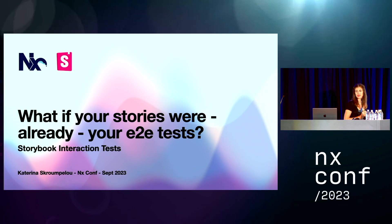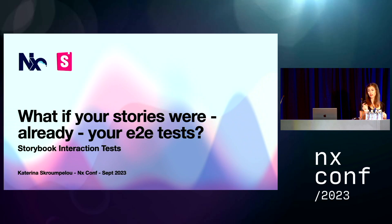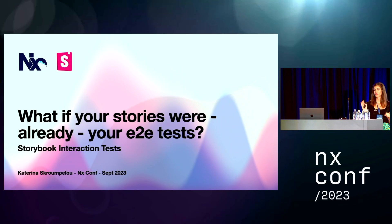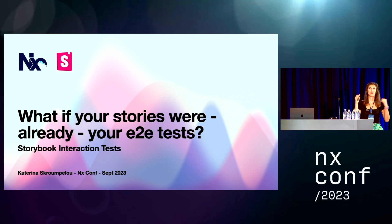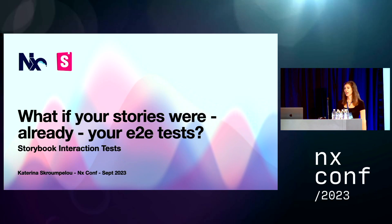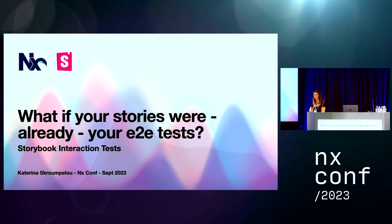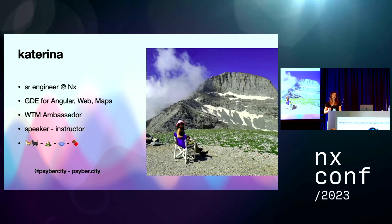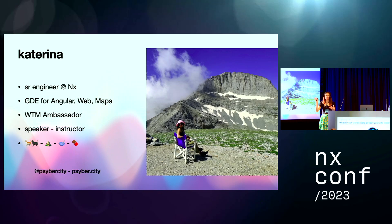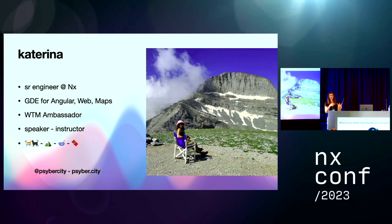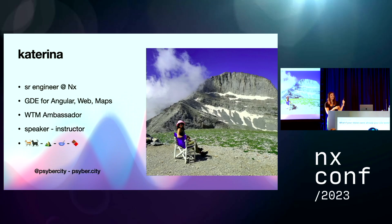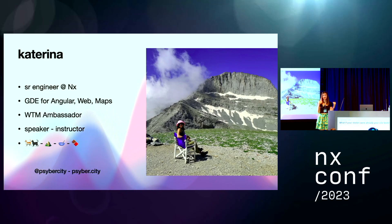Today we're going to talk about Storybook interaction tests — what if your stories were already your retweet tests? And we're going to be seeing a lot of pictures of my cats. As Philip very well said, I'm a senior engineer at The Next, GD for Angular Web and Maps, WTM Ambassador. I like cats, mountains, oatmeal, and chocolate. You can follow me at CyberCity or find my website, cyber.city.